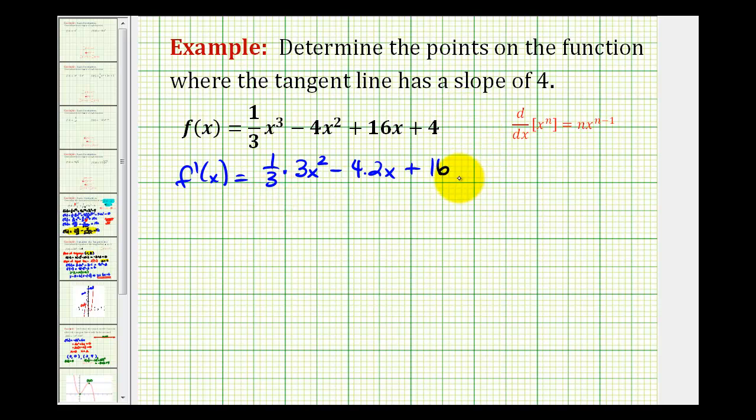So let's go ahead and clean this up, set it equal to four, and solve for x. So here we'll have x-squared, minus eight x, plus 16. We want to know when this is equal to four. This will tell us the locations where the tangent line has a slope of four.